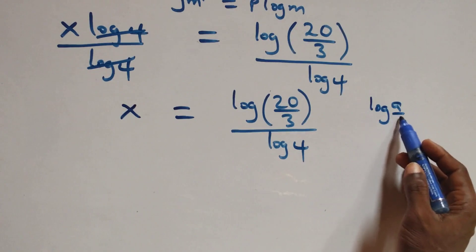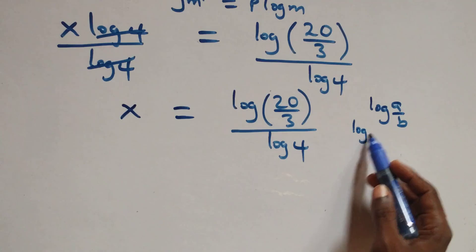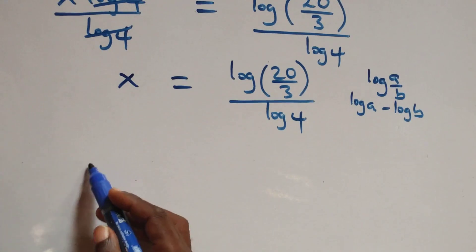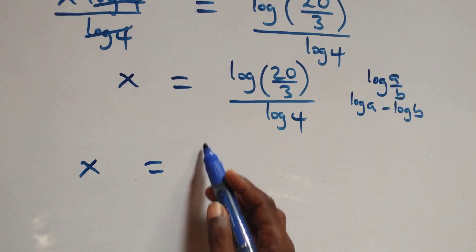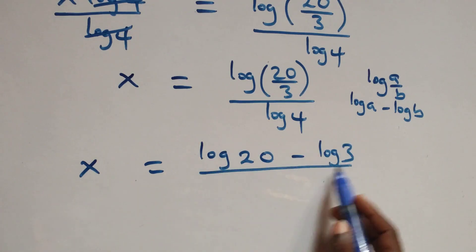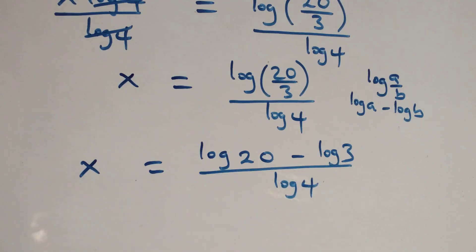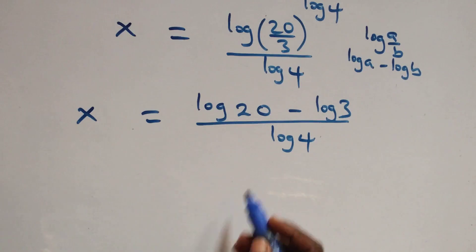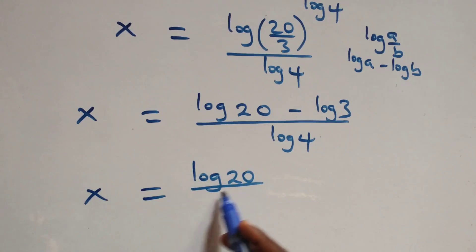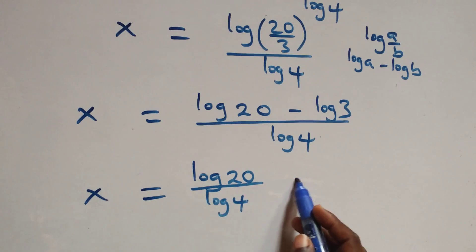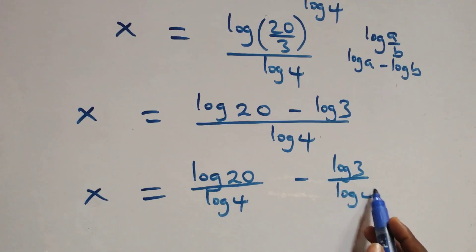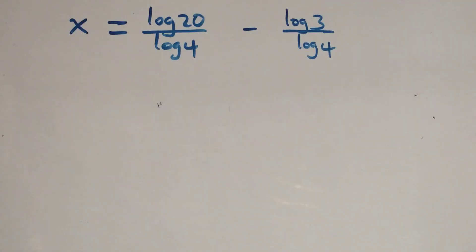Now log(a/b) is the same thing as log a minus log b. So this becomes x equals to (log 20 minus log 3) over log 4. We separate this into two fractions: x equals to log 20 over log 4 minus log 3 over log 4.